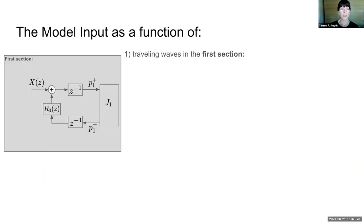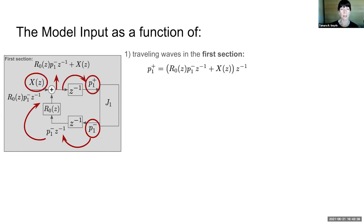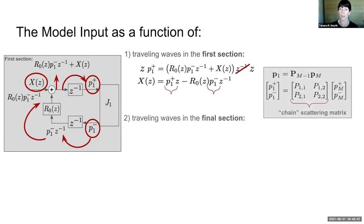To do this, we express the model input first as a function of traveling waves in the first section. Following the signal flow, we get our expression that can be rearranged to isolate for X. We then take those traveling waves and express them as traveling waves in the final section by using our chain scattering matrix.